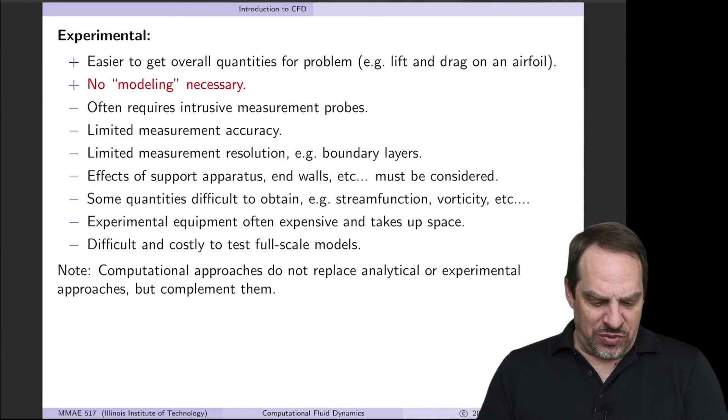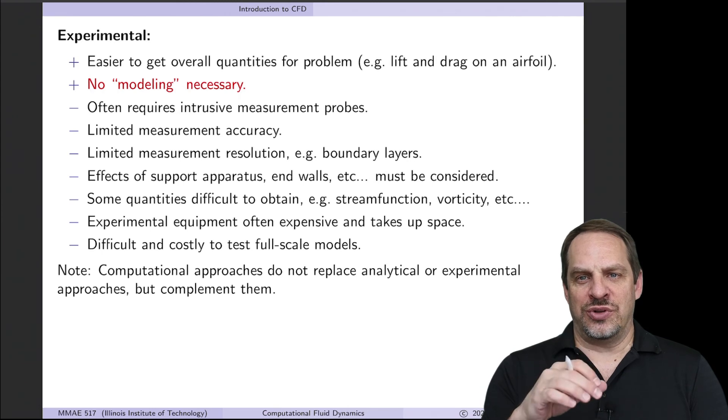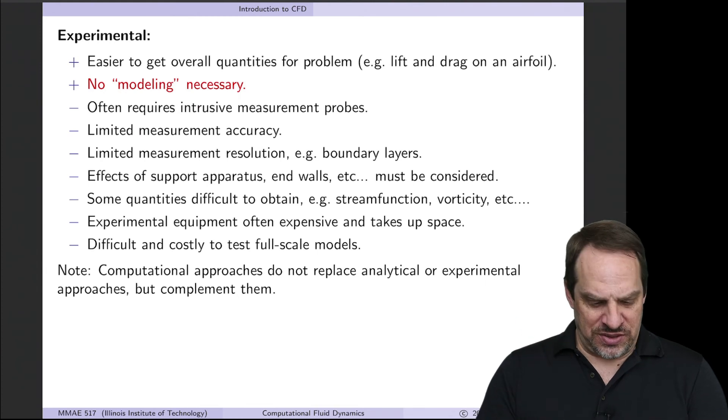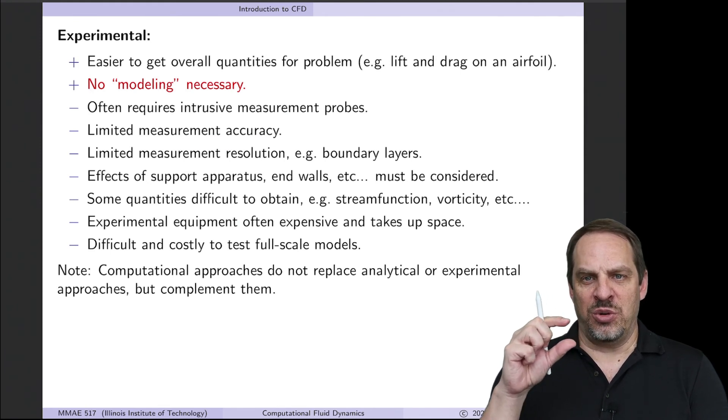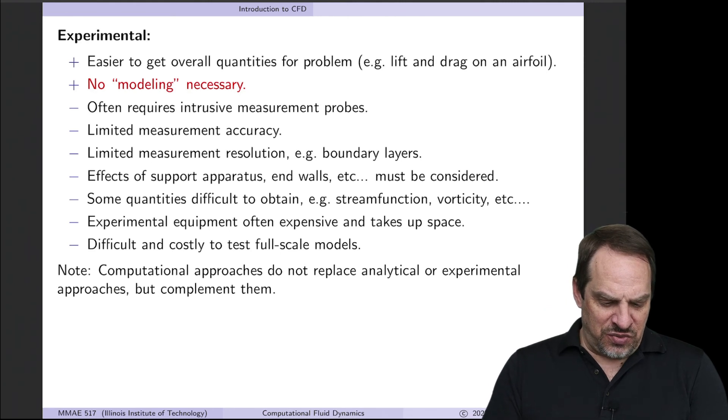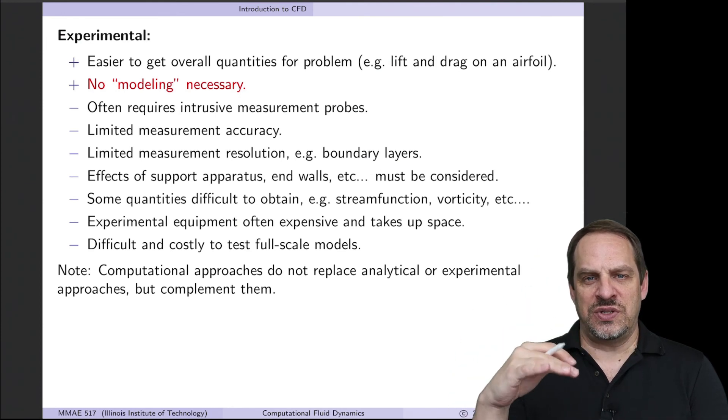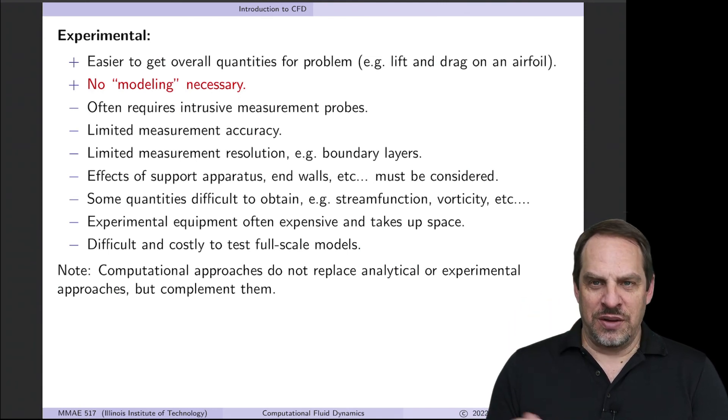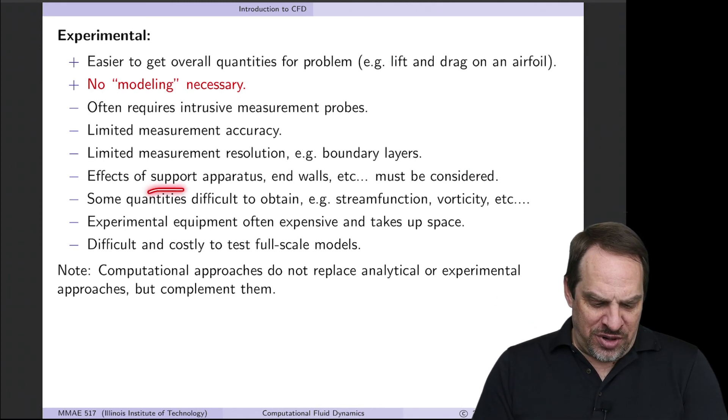Now, there are a number of issues. One is that it requires intrusive measurement probes. Anytime you stick a measurement probe into a fluid in order to measure velocity, say, or pressure, well, you've changed the flow just a little bit because of the presence of that probe. Limited measurement accuracy. Whatever probe you're using, whatever technique you are using for measurement, will have some error bars. It's not perfect. Limited resolution. So boundary layers are very thin layers along solid surfaces in high-speed flows where things are changing very rapidly across those thin layers. You stick a probe in that tiny little boundary layer and you can just obliterate the boundary layer.